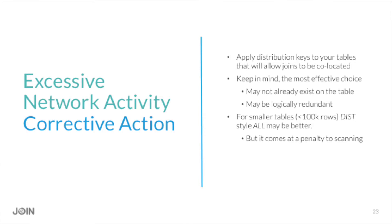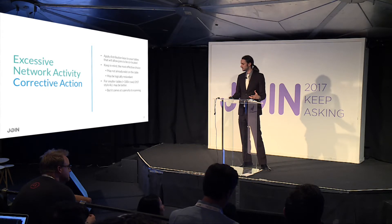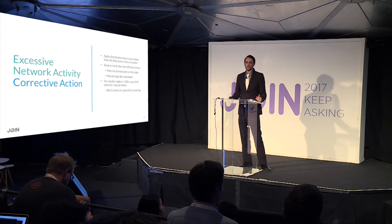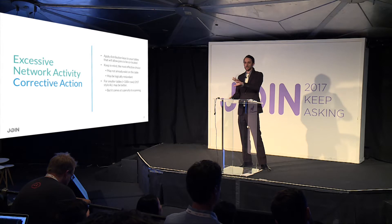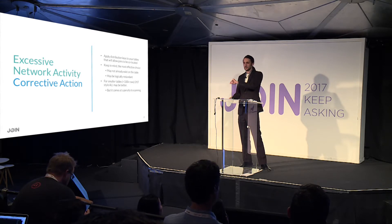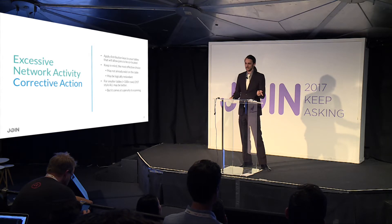Corrective actions are about setting distribution keys or distribution style so both sides of a join are co-located. A surprising tip is that the most effective distribution key might not already be on that table. For example, in a restaurants application, you have a restaurant entity, a table entity within a restaurant, and a seat entity belonging to a table.